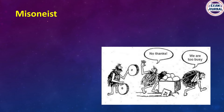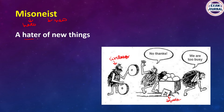Misoneist — someone who hates new things. For example, imagine a person dragging a cart with square wheels by hand, but a new person comes and says 'use circular wheels and you'll benefit more' — but the old person says 'no thanks, we are too busy, we don't want new technology.' A hater of new things — like old people who still prefer cash and refuse new digital payments — that is an example of a misoneist.